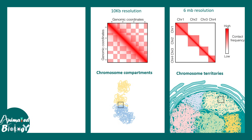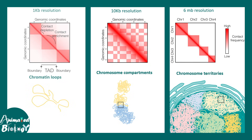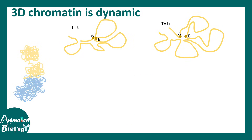At a very zoomed-in view, one can understand how specific intra-chromosomal regions form loops and come close in time and space. All these correlation matrices have their own meaning, which will be described in a different video in much more detail.